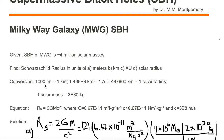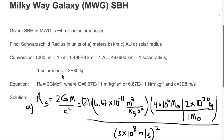Our given conversions are: 1,000 meters equals 1 kilometer; 1.496×10⁸ kilometers equals 1 AU; 497,600 kilometers equals 1 solar radius; and 1 solar mass equals 2×10³⁰ kilograms. The Schwarzschild radius equation is R_S = 2GM·c⁻², where G = 6.67×10⁻¹¹ m³·kg⁻¹·s⁻², and c = 3×10⁸ meters per second.